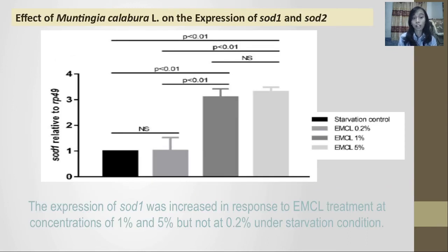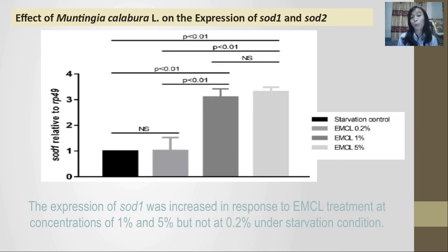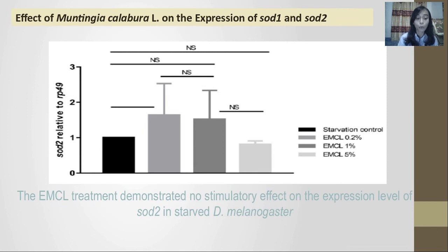Regarding the effect of Muntingia calabra L. on SOD1 and SOD2 expression: EMCL was able to increase SOD1 expression, but not at 0.2%, under starvation condition. This may occur due to the activity of unidentified EMCL compounds that can activate the production of SOD1 in the melanogaster. In the next picture, we can see different results on SOD2.